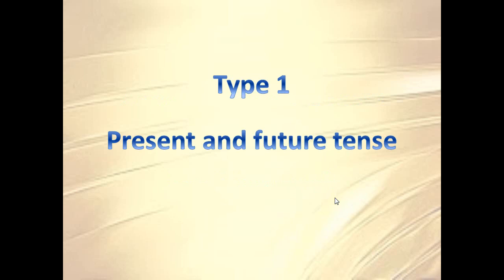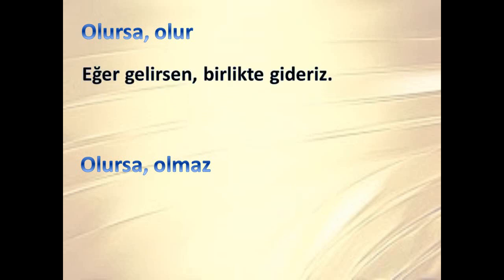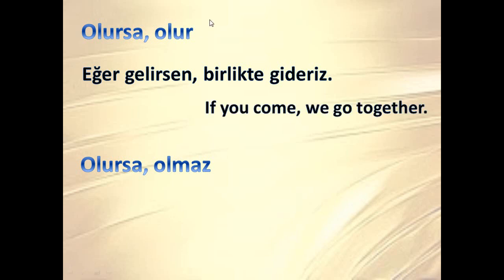Type 1 is used for present and future tense. So we have olursa olur — if this happens, this happens. For example: if you come, we go together.